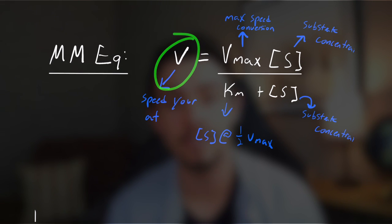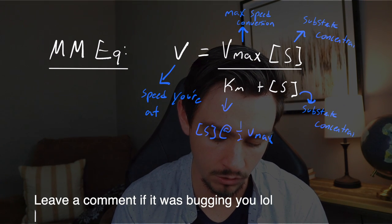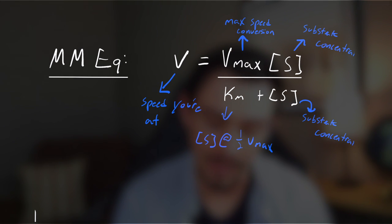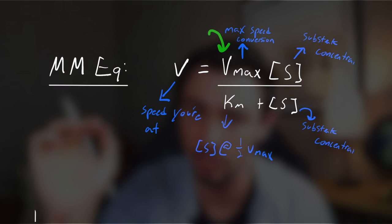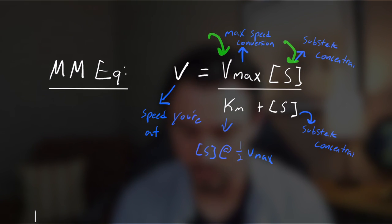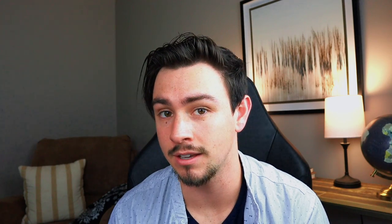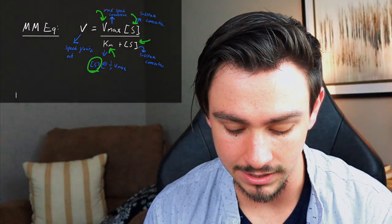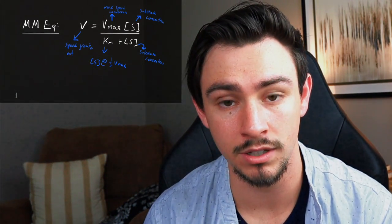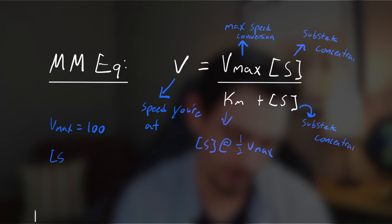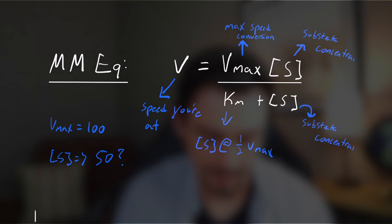Vmax is the speed you could achieve under optimal conditions. The equation takes Vmax — your potential — and multiplies it by your conditions, which are essentially the substrate concentration and the Km. Km is an intrinsic property of that reaction with that enzyme. You find Km by finding how much substrate it takes for your enzyme to reach 50% of Vmax. If Vmax is 100, you want to see how much substrate it takes to get to 50 — however much that is, that equals your Km. So Km should be a concentration value.